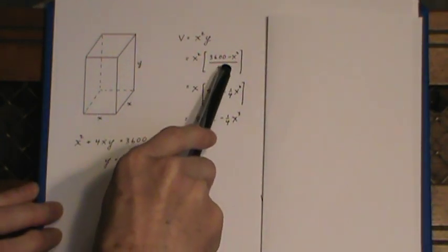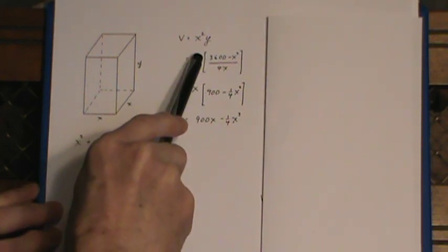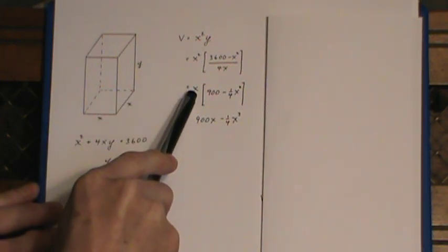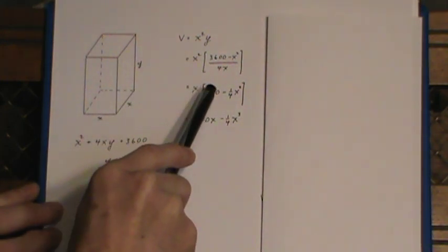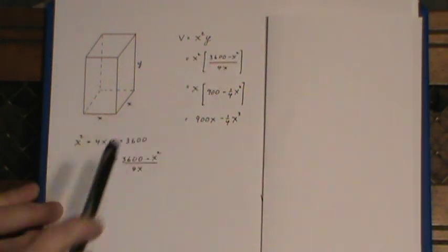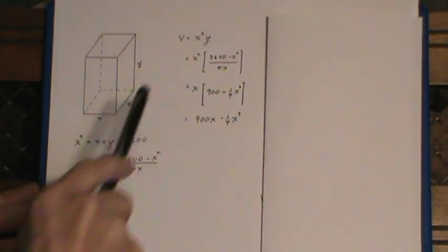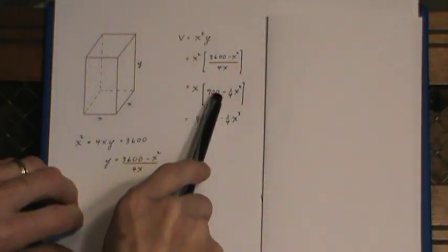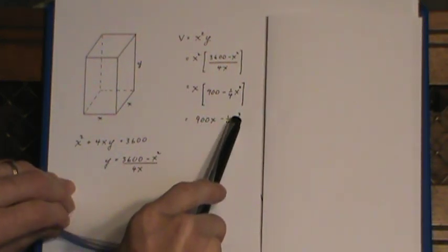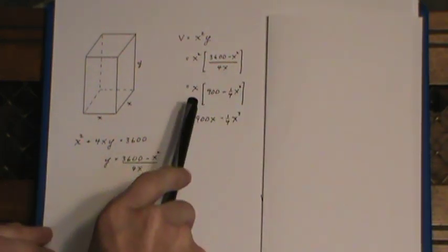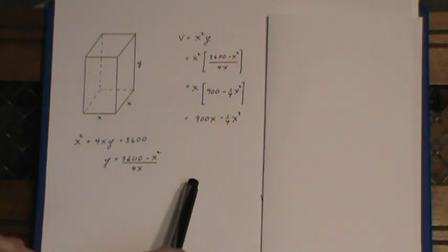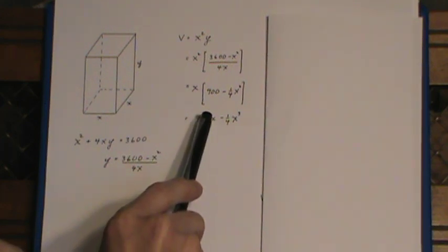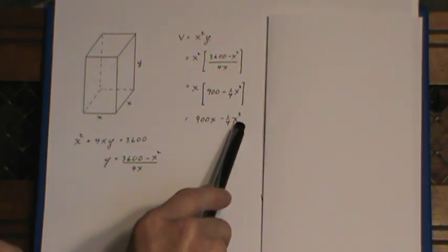Then I divide the x on the bottom into the x squared on the outside leaving me with x there and then divide the four into the two expressions on the top. I write it this way and then I bring the x in because I want this as simple as possible because if I'm going to take a derivative I just want this to be a very simple polynomial.